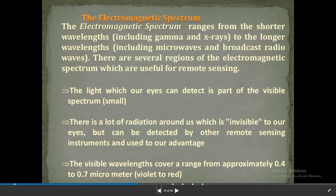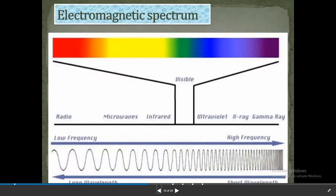The electromagnetic spectrum ranges from the shorter wavelengths including gamma and x-rays to the longer wavelengths including microwaves and broadcast radio waves. There are several regions of the electromagnetic spectrum useful for remote sensing. The light our eyes can detect is part of the visible spectrum, which is a small portion. There is a lot of radiation around us which is invisible to our eyes but can be detected by other remote sensing instruments. The visible wavelengths cover a range from approximately 0.4 to 0.7 micrometers, which is violet to red.